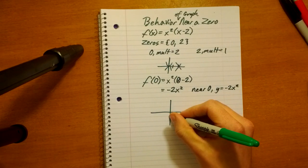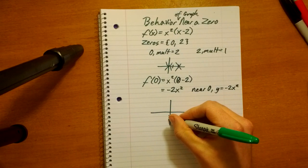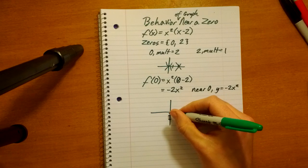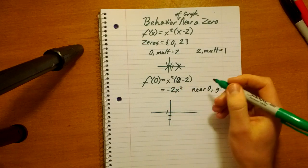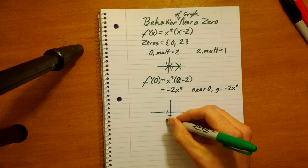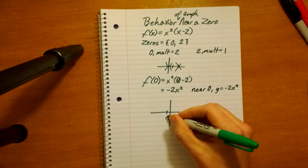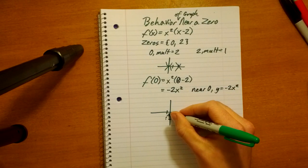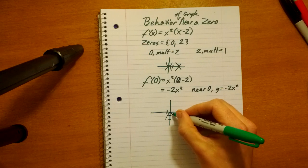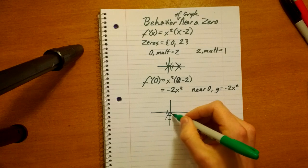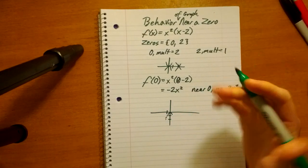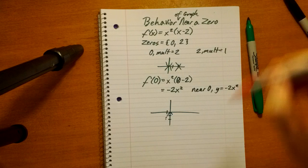So, if the graph were to continue going as negative 2x squared, which it doesn't, it would go out here. But, all we need to know is near the x-intercept, it's like this. That's all we need to know, basically, is that it's on this side. Because we're making a really kind of loose graph.